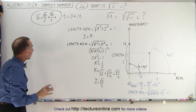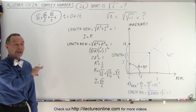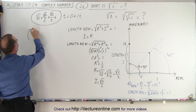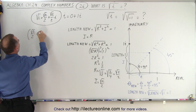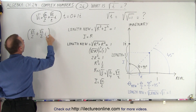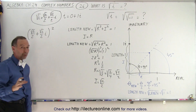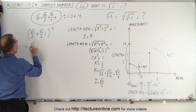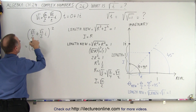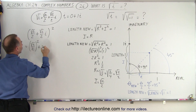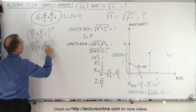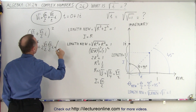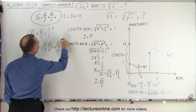Now if you're not sure that that's correct, guess what we could do? We can square that number and see if we get back the original. So let's square √2/2 plus √2/2 times i. And of course whenever we square a binomial, that means it's the first term squared, so it would be (√2/2)² plus twice the product of the two terms — 2 times √2/2 times √2/2·i — plus the last term squared, which is (√2/2·i)².